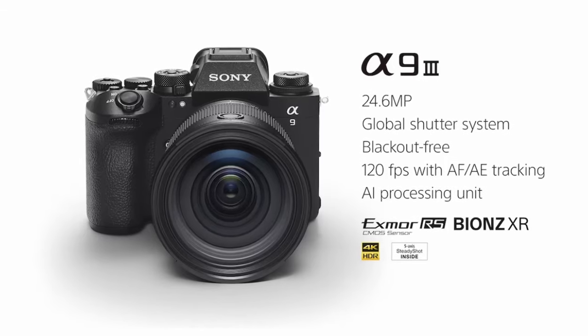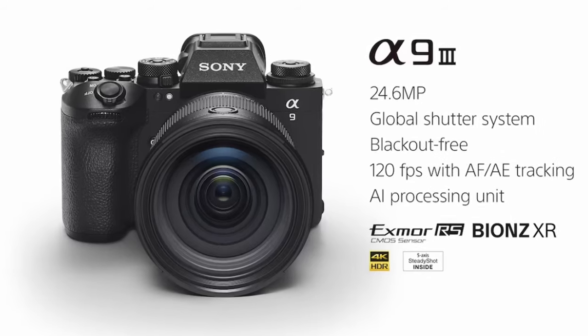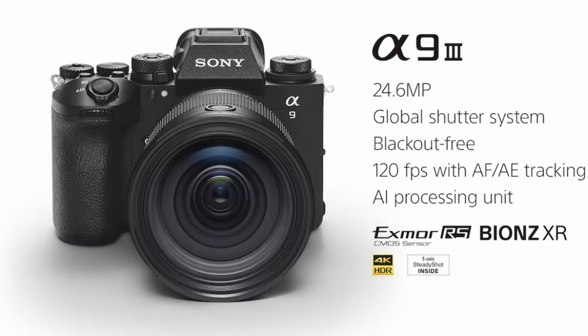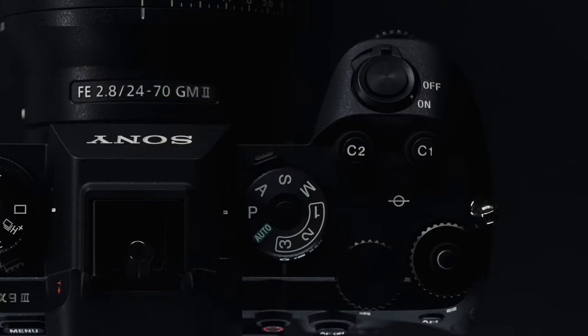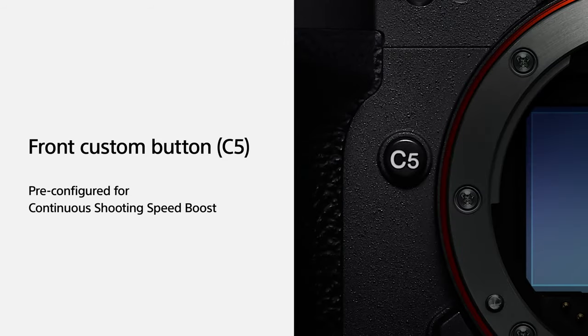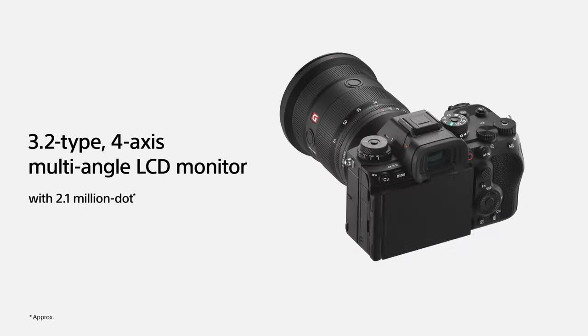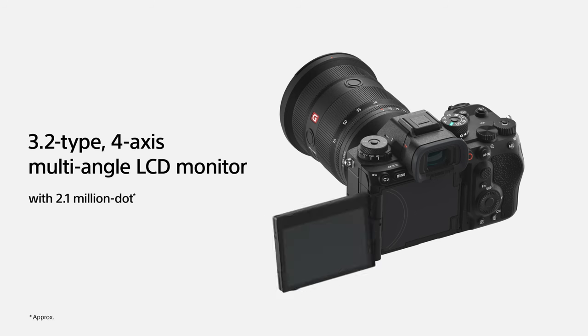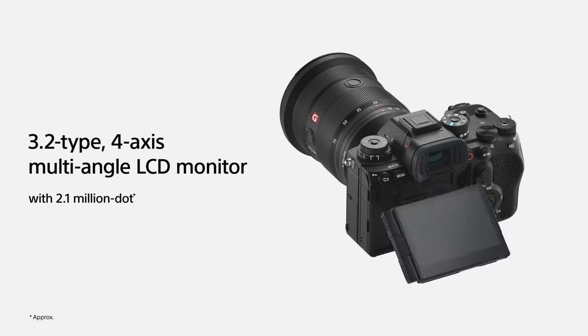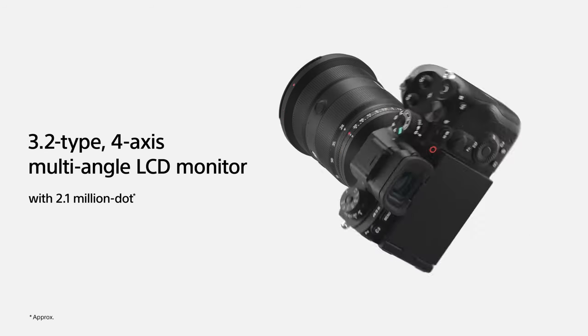So the latest and greatest is the a9 Mark III. It's basically the upgrade to the a9 Mark II, and the big change is the new global shutter and the ability to shoot at 120 frames per second consistently, which is a real improvement in terms of speed. It really appeals to wildlife and sports photographers. It's got a 21 megapixel sensor, so there's enough resolution to use in a professional environment.